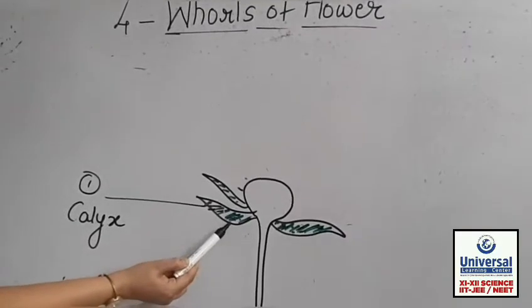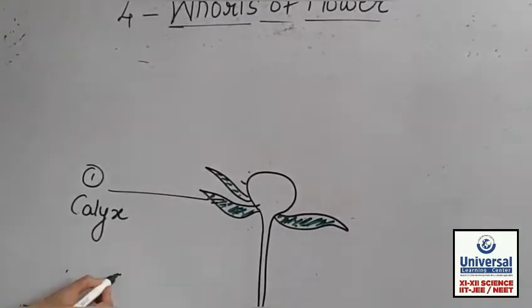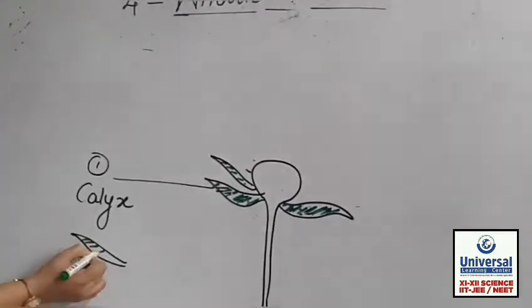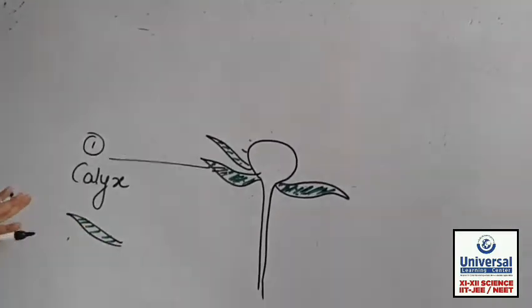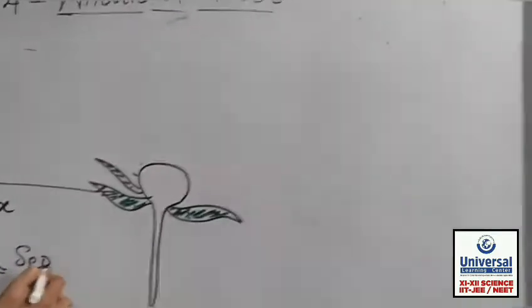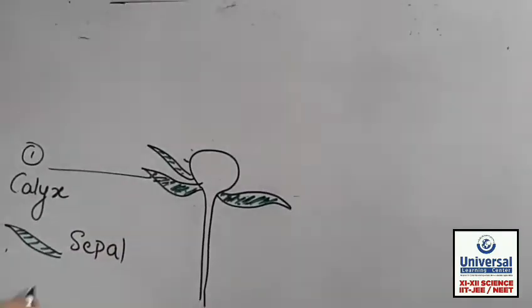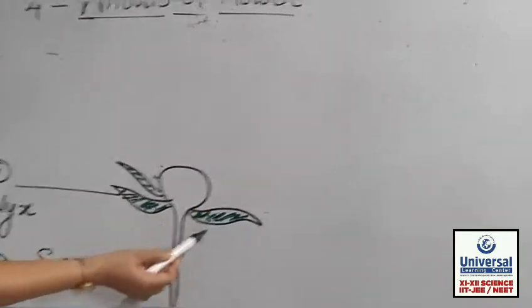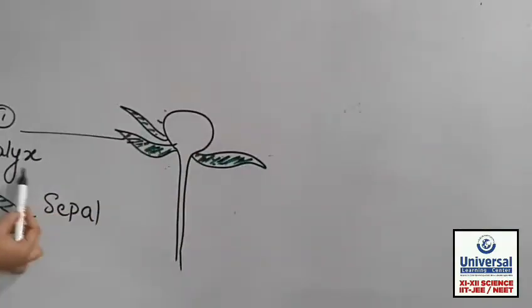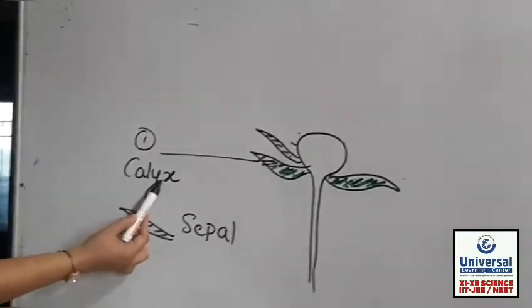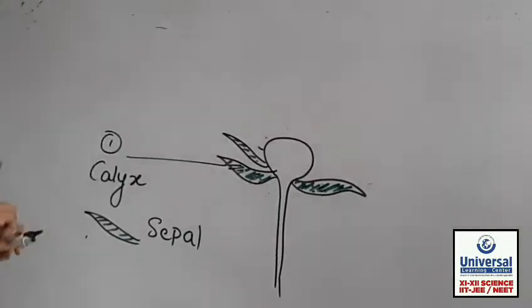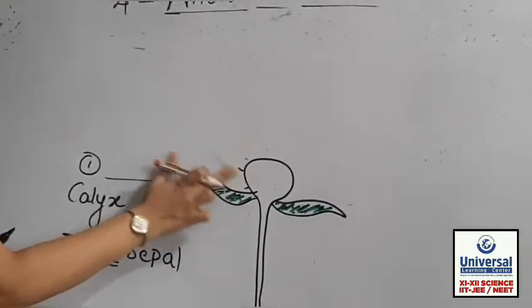But if I take a single structure out, that single structure is called a sepal. So single is sepal, but the whole layer — the whole wall — is called calyx. So calyx is made up of many sepals.